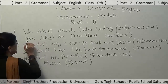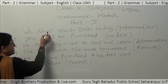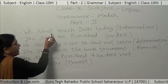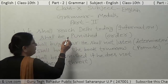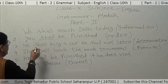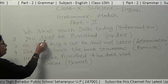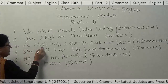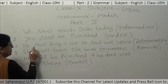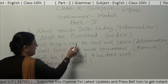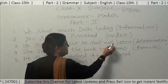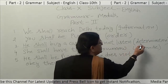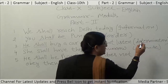Shall with second person is used here. In simple information, with first person — I, we — we use 'shall', and for second and third person we use 'will'. 'You shall be punished' shows order. 'He shall buy a car. He shall not listen to parents.' Here firm determination is shown.